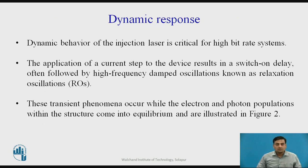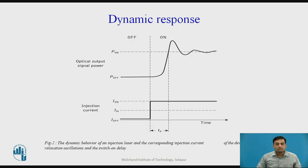The next characteristic is dynamic response. The dynamic behavior of the injection laser is critical, especially when used in high bit-rate optical fiber communication systems. The application of a current step to the device results in a switch-on delay, often followed by high-frequency damped oscillations known as relaxation oscillations. These transient phenomena occur while the electron and photon populations within the structure come into equilibrium, as illustrated in Figure 2. The switch-on delay td may last for 0.5 nanoseconds and the relaxation oscillations for perhaps twice that period.